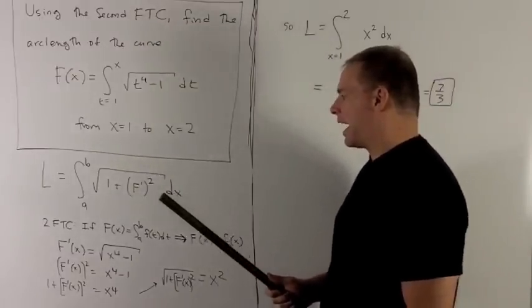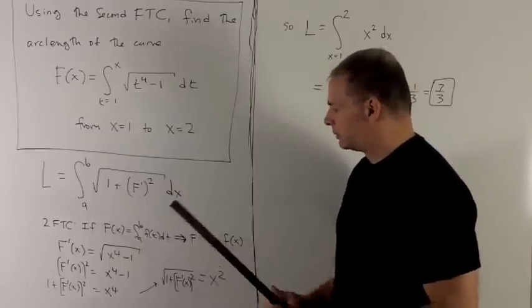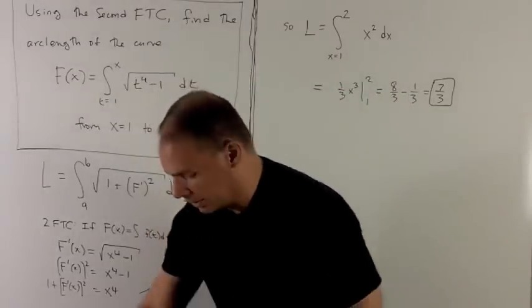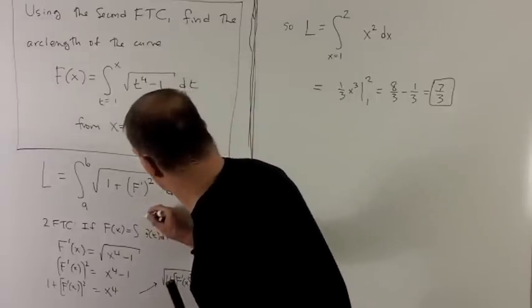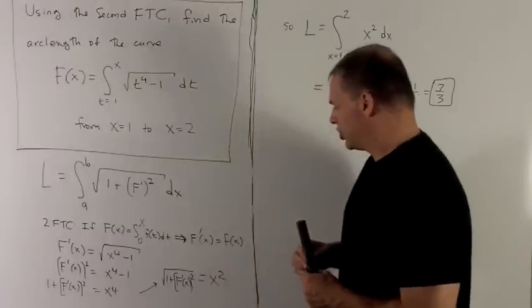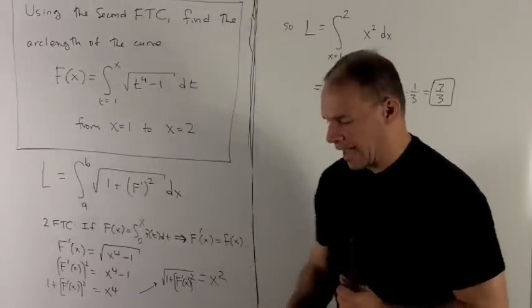Now, what does the second fundamental theorem of calculus say? If big F of x equals the integral from 0 to x of little f of t dt, then the derivative of big F of x is just going to be take that little f, and where I had a t, I just put an x.